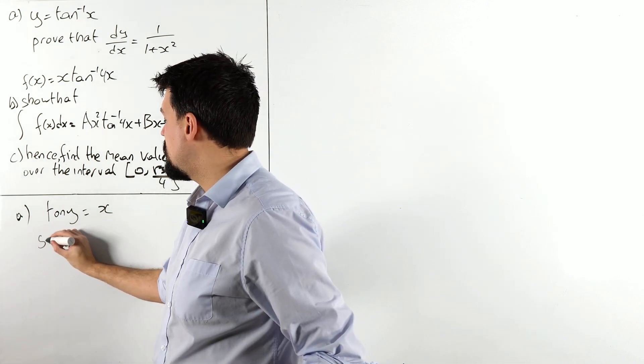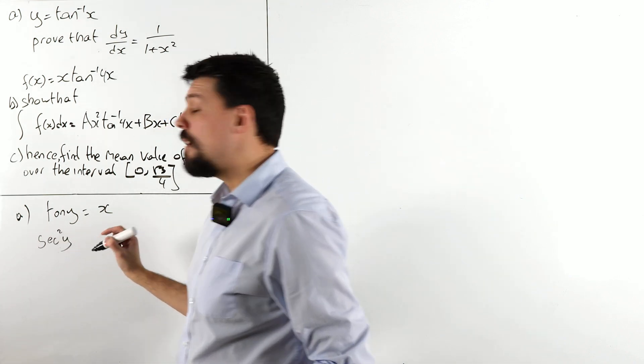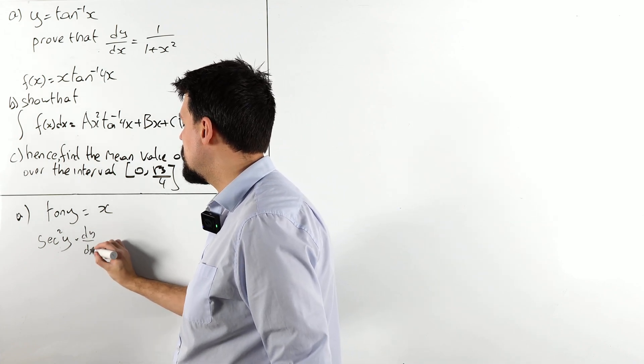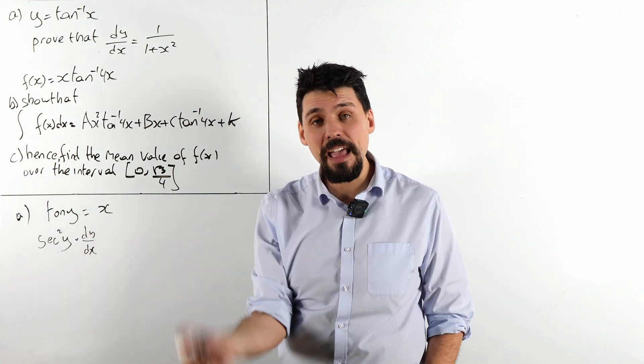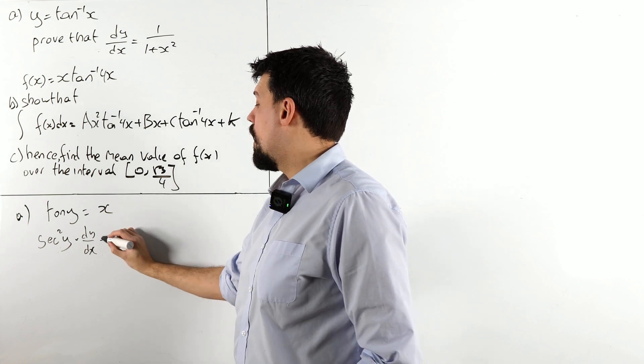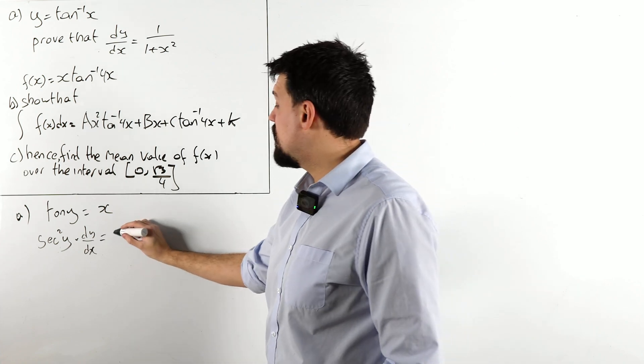Tan, of course, differentiates to sec squared. Do not forget, dy by dx we are differentiating with respect to x, not with respect to y, so we've got a chain rule clocking in, and x differentiates to 1.